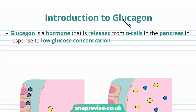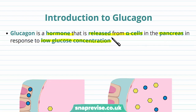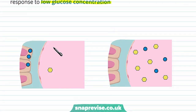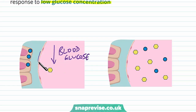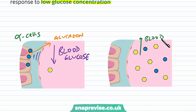Glucagon is an important hormone released from the pancreas and it's kind of the opposite of the action of insulin. It's a hormone released from the alpha cells found in the pancreas in the islets of Langerhans, and it's released in response to whenever there is a low glucose concentration in the blood. So if it's been a while since we've eaten, for example, or we've had lots of exercise, the blood glucose levels may drop down. As a response to this, the pancreas releases the hormone glucagon from the alpha cells, and it basically functions to bring the blood glucose back up.